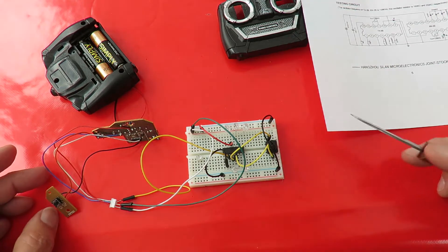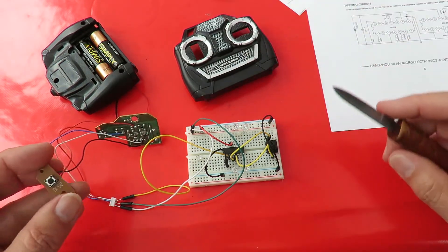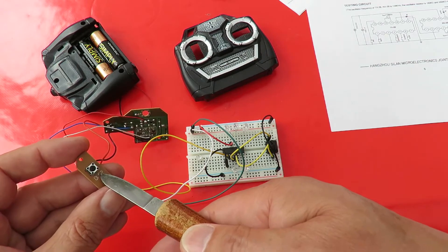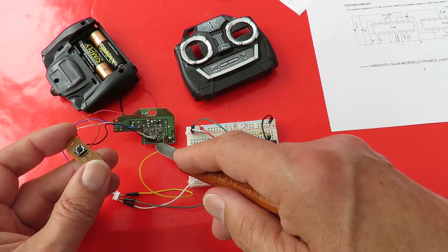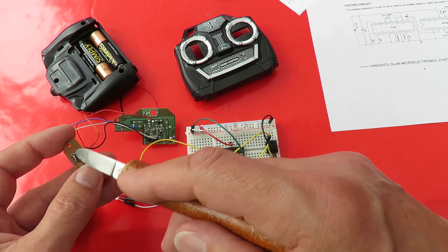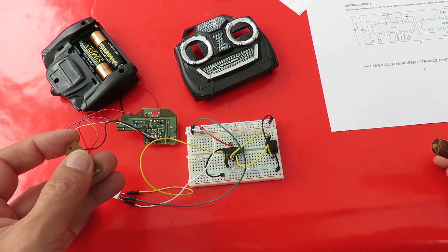And then what I've done, which the original transmitter doesn't have, is I've added in the turbo button, which goes to pin 6 on that one. And if I press that button, that light should come on. And there we go.